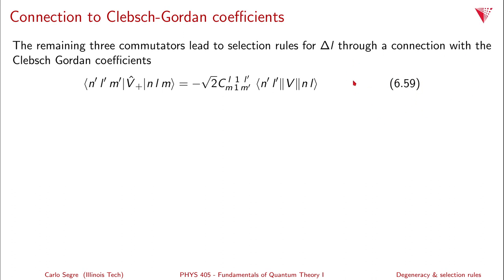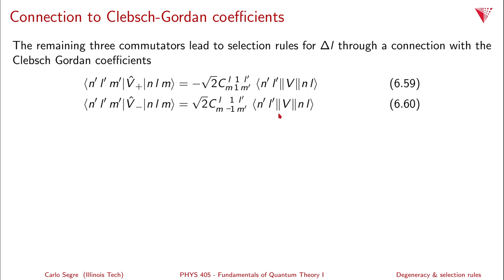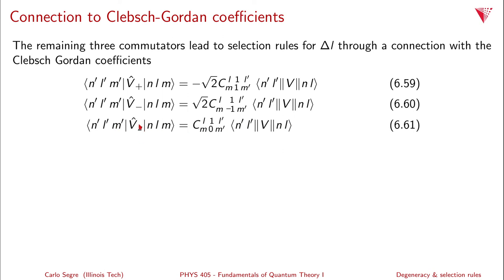The matrix element N prime, L prime, M prime, V plus, N, L, M equals minus square root of 2 times a Clebsch-Gordon coefficient C with M, 1, M prime, L, 1, L prime times the reduced matrix element N prime, L prime double-bar V double-bar L. Similarly, the matrix element with V minus equals plus square root of 2 times the Clebsch-Gordon coefficient with M minus 1, M prime, L, 1, L prime times the same reduced matrix element.